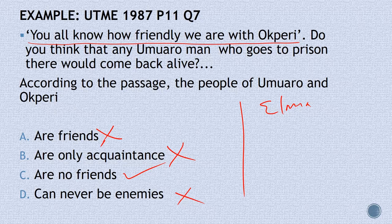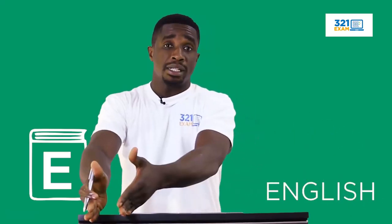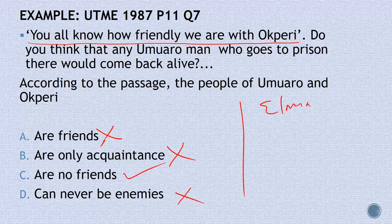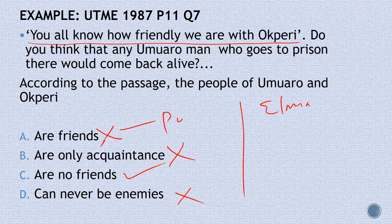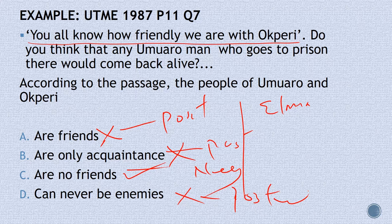The JAM exam is purely for intelligent students. Looking at the options: A, 'our friends,' is positive. B, 'our only acquaintance,' is positive. C, 'our no friends,' is negative. D, 'can never be enemies,' is positive. The examiner has given you three positive options and one negative option. Which one is odd? The negative one. That's why the answer is C, 'our no friends.'